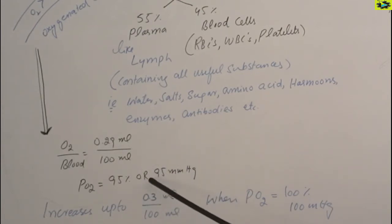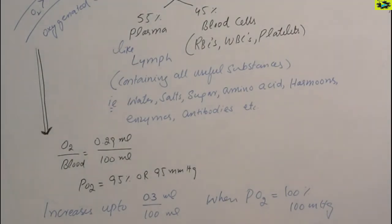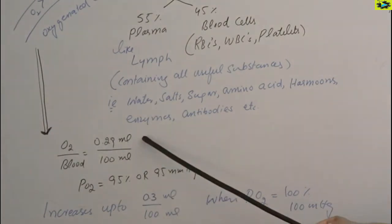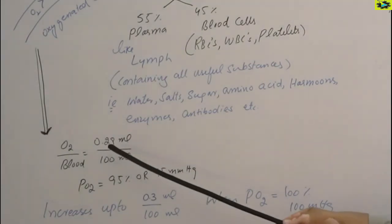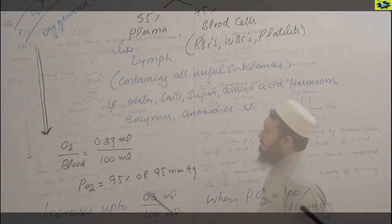But if we do exercise, if it is 100 mm of mercury partial pressure of oxygen, then the value will be 0.3 ml. If oxygen is in the blood, it will become about 0.2 ml in 100 ml of blood or 0.3 ml in 100 ml of blood, when partial pressure is about 100 mm of mercury.